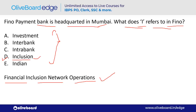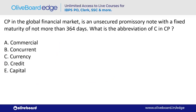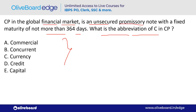CP in the global financial market is an unsecured promissory note with a fixed maturity of not more than 364 days. CP is a money market instrument. What is the abbreviation of CP? CP stands for Commercial Paper — a short-term money market instrument.